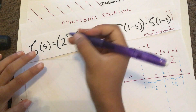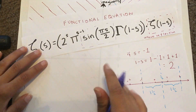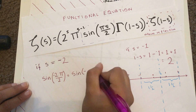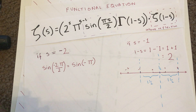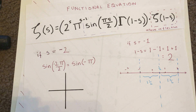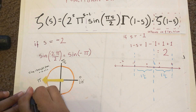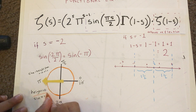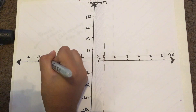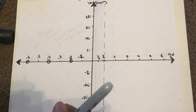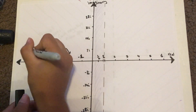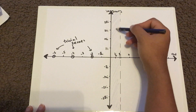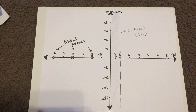This equation also tells us one more important thing: it takes the sine of pi s over 2. If s is a negative even number like negative 2, plugging it in causes the equation to take the sine of a whole integer multiple of pi. We know from the unit circle that sine of any multiple of pi equals 0. All this means is that when you plug in negative even numbers from the complex plane, the zeta function will be 0. But mathematicians consider these zeros obvious, so they call them trivial zeros.